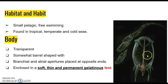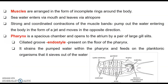They have two openings, that is the mouth and the atrial apertures. These bodies are enclosed by a permanent, gelatinous, soft and very thin test. The body is also enclosed with circular bands of muscles, and these bands of muscles are incomplete in nature and they do not meet ventrally.